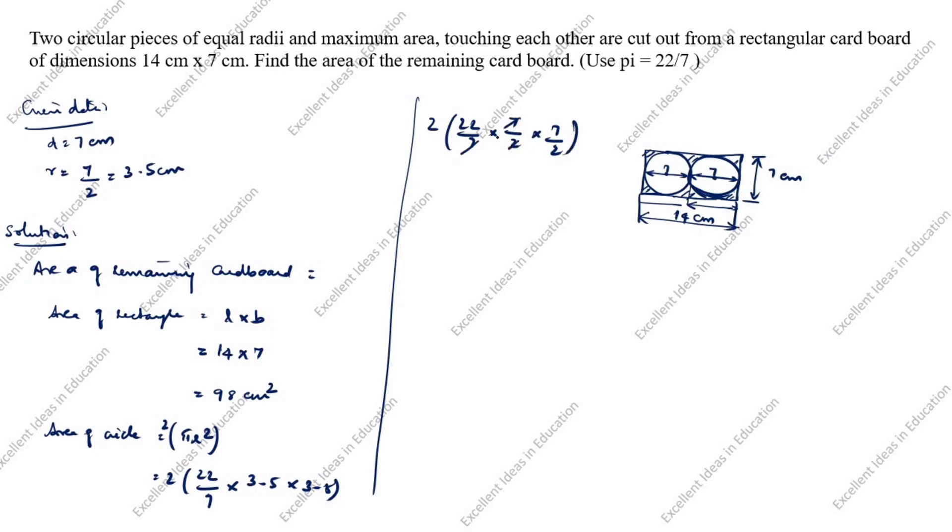17, 17 cancel. This 2 is 11. 11 sevens are 77 divided by 2 into 2. Next, 2 into 77 divided by 2. This 2 and this 2 cancel. What is remaining? 77, 77 centimeter square.